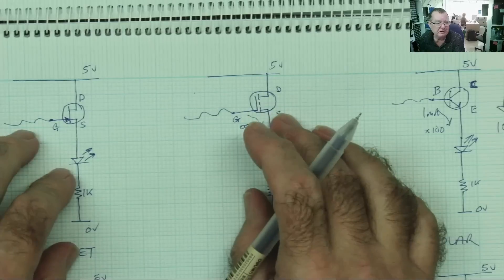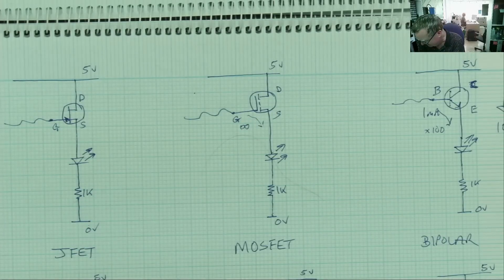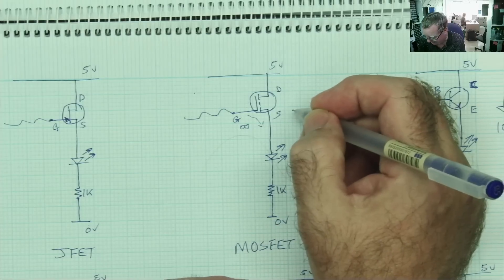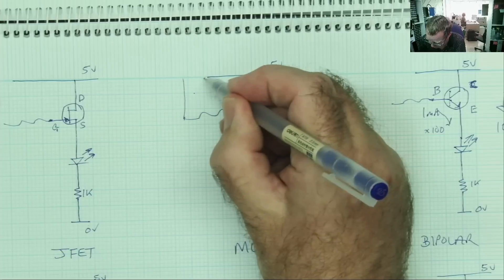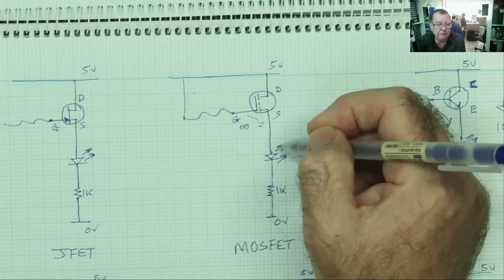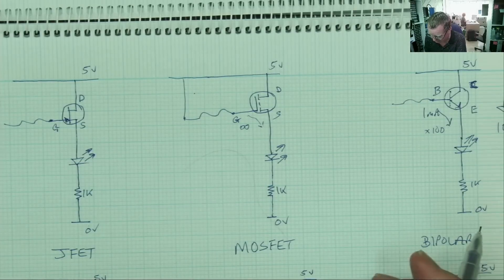So all circuits effectively do the same thing. They light the LED, but they have different properties. Well, so far, these two sound like the same. Well, there is a difference. So gate impedance on this MOSFET is basically, as I said, infinite. Which means I can connect the white wire directly to here, and the current flowing through here will still be zero. Yeah, it's zero. It's an infinite resistance.